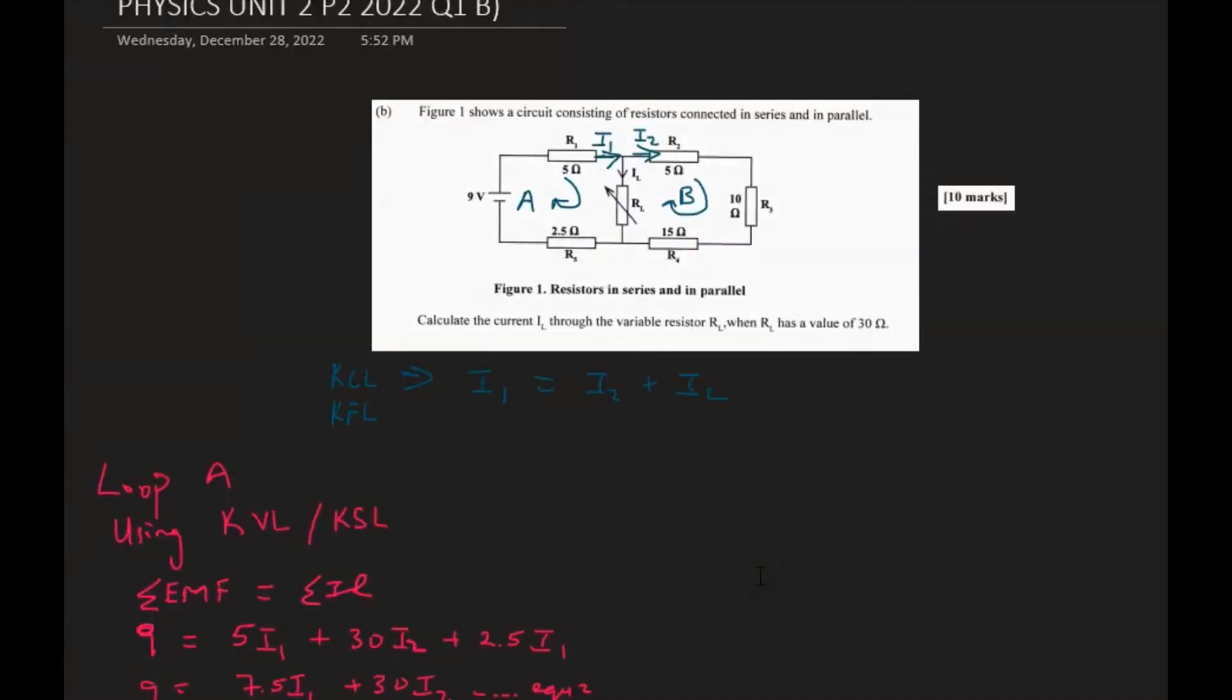All right guys, so we are going to question one part B of the 2022 CAPE Unit 2 past paper. Now this question is a Kirchhoff's question or circuit analysis type of question where we have different resistors in series and in parallel.